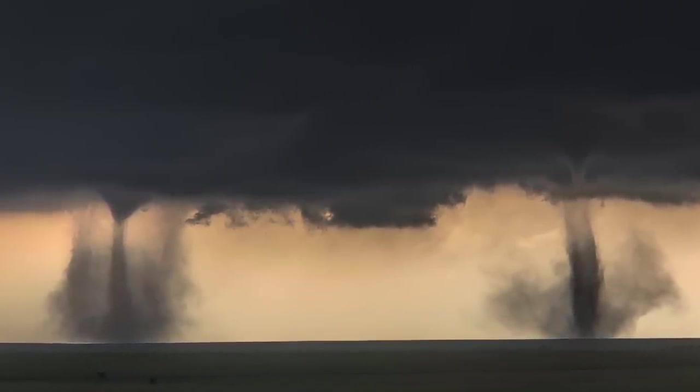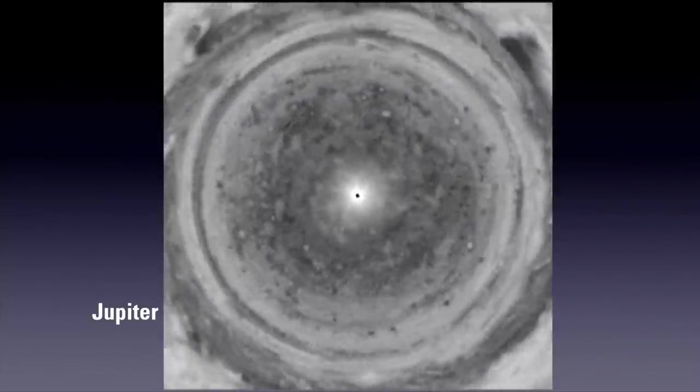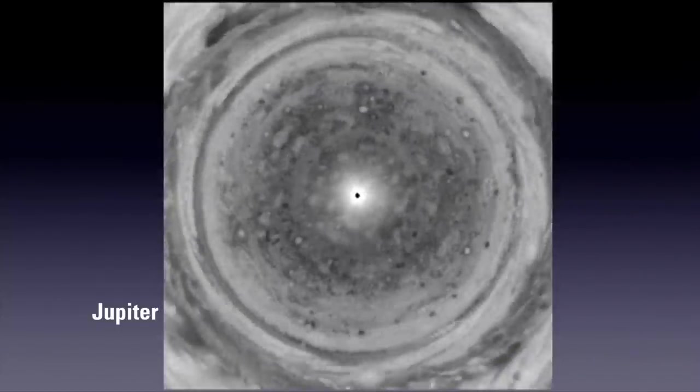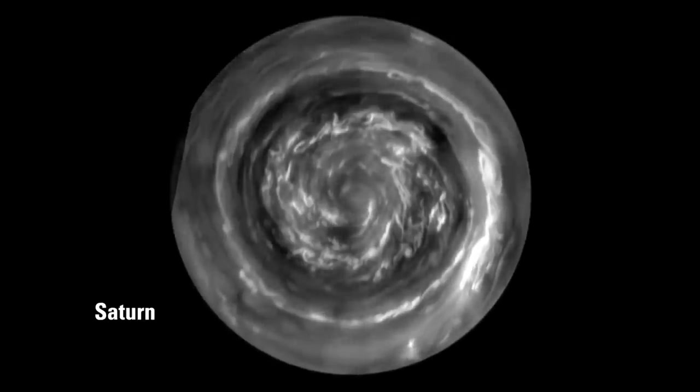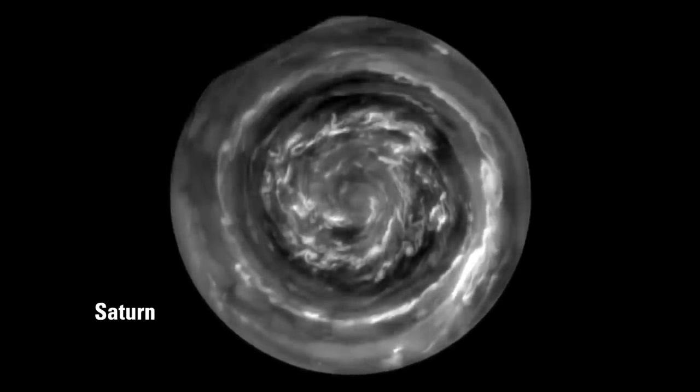When NASA recorded those coaxial counter-rotating cloud bands on both Jupiter and Saturn, my model had passed its first test. That was the extent of my first foray into this cosmological jungle.